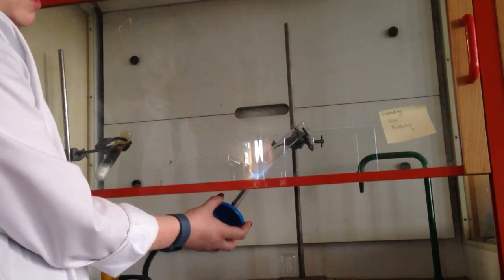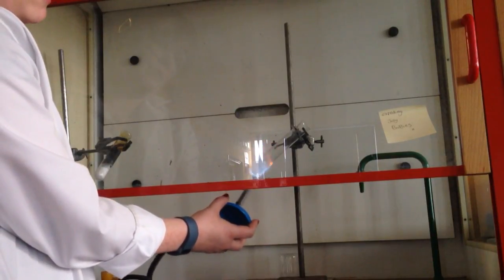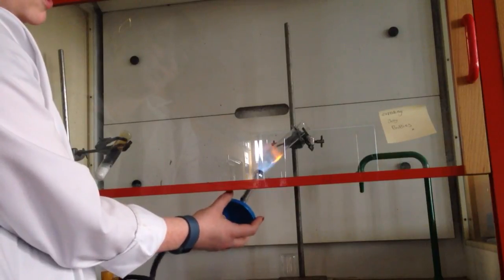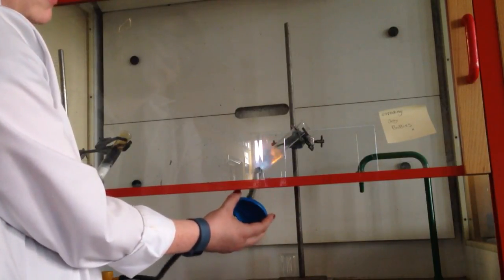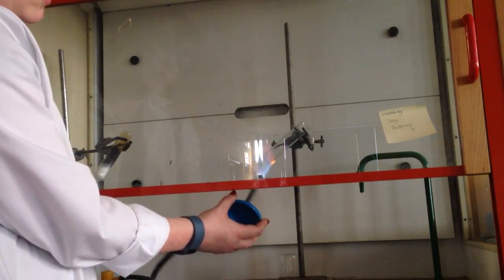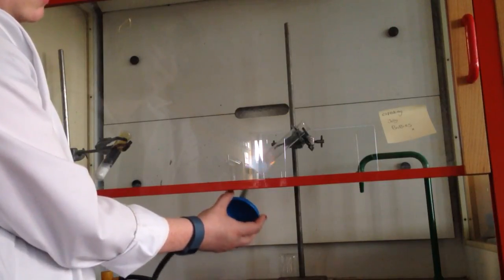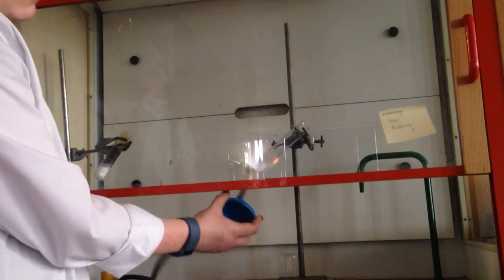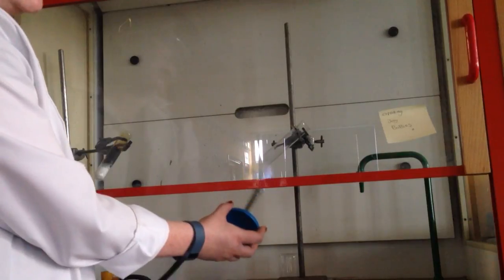The potassium chlorate here provides our oxygen and the jelly baby provides the sugar and once I've got this nice and liquid I'm just moving this around while I'm heating it up so that it doesn't char or get too hot in one place.